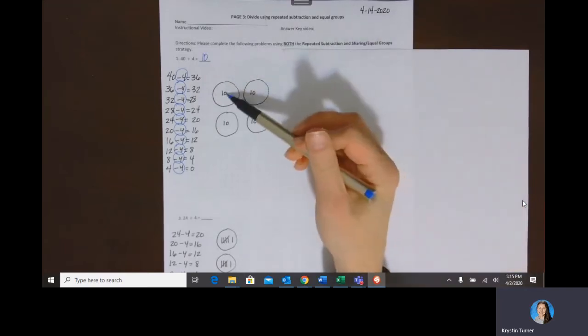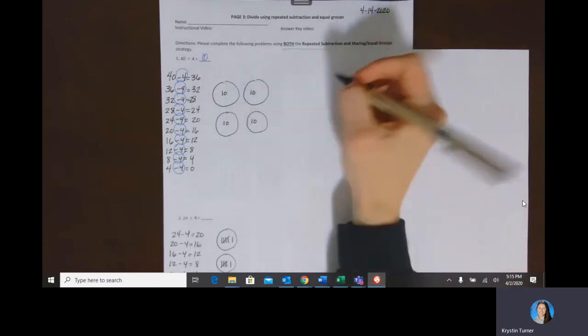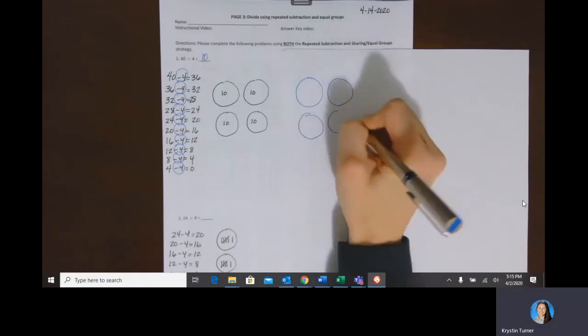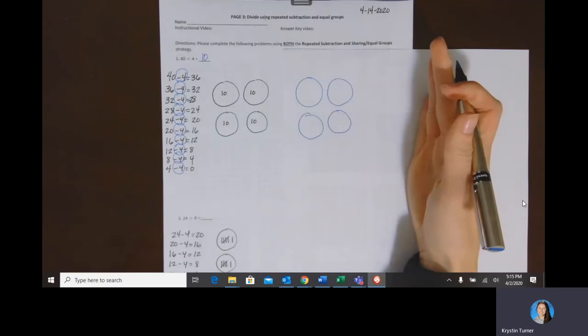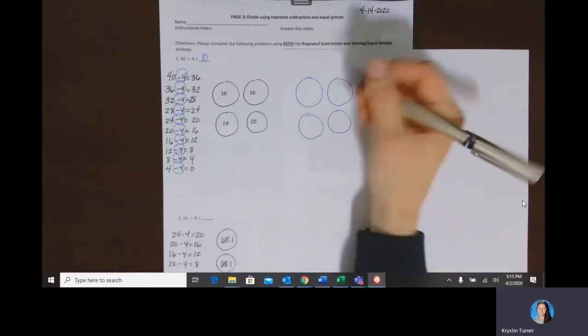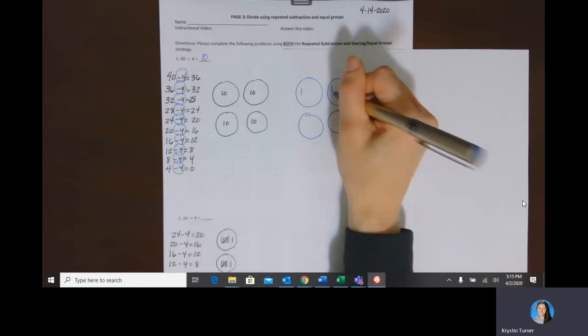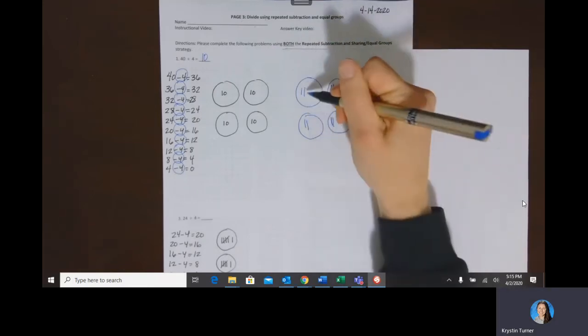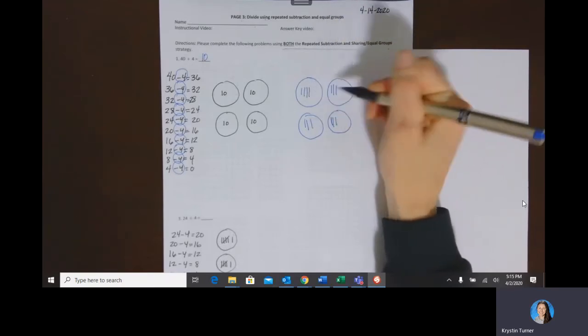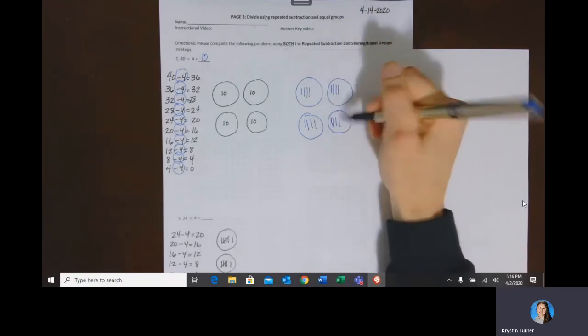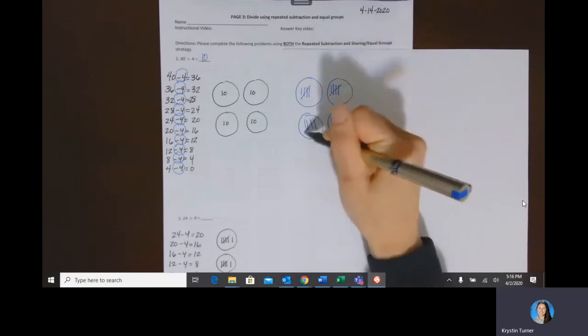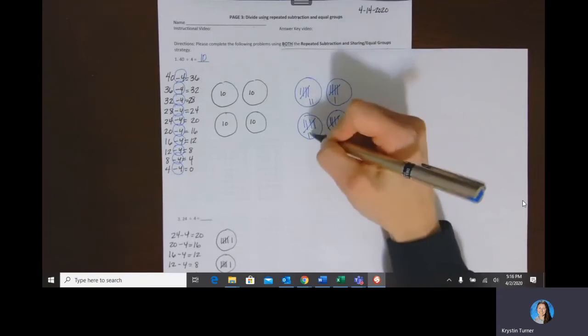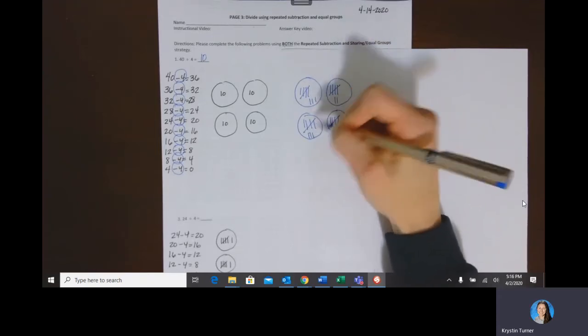The other thing to do would be to make four equal groups and then to think you could count up to 40 until you don't have any more of the whole and then see how much it's in each one. So we could just count 1, 2, 3, 4, 5, 6, 7, 8, 9, 10, 11, 12, 13, 14, 15, 16, 17, 18, 19, 20.